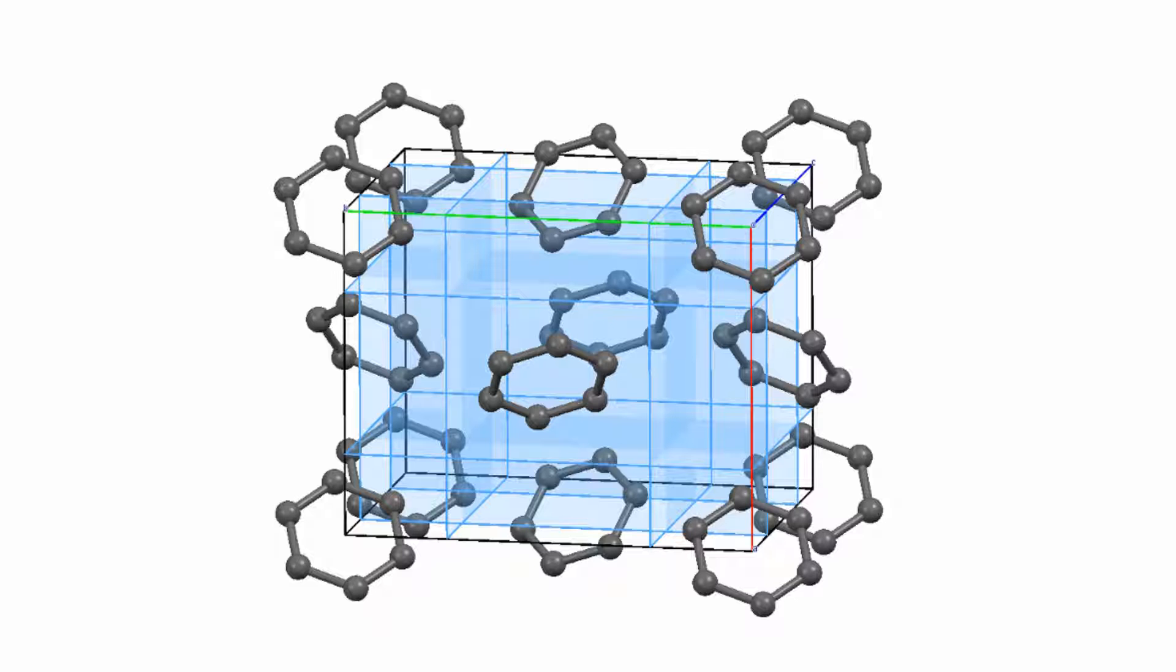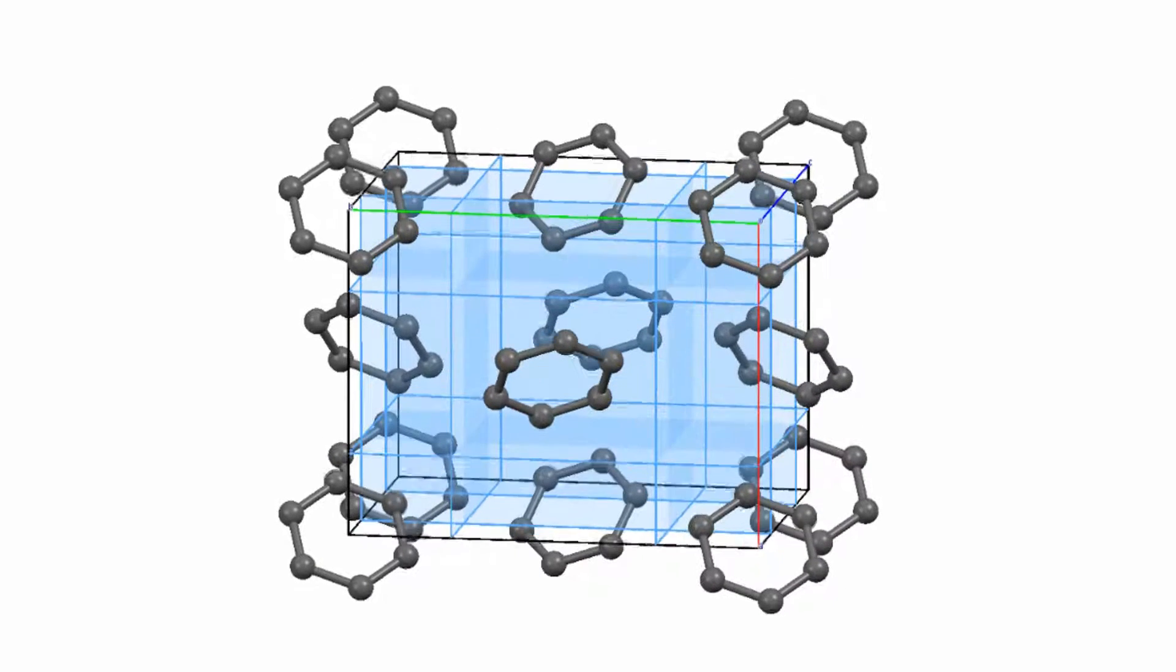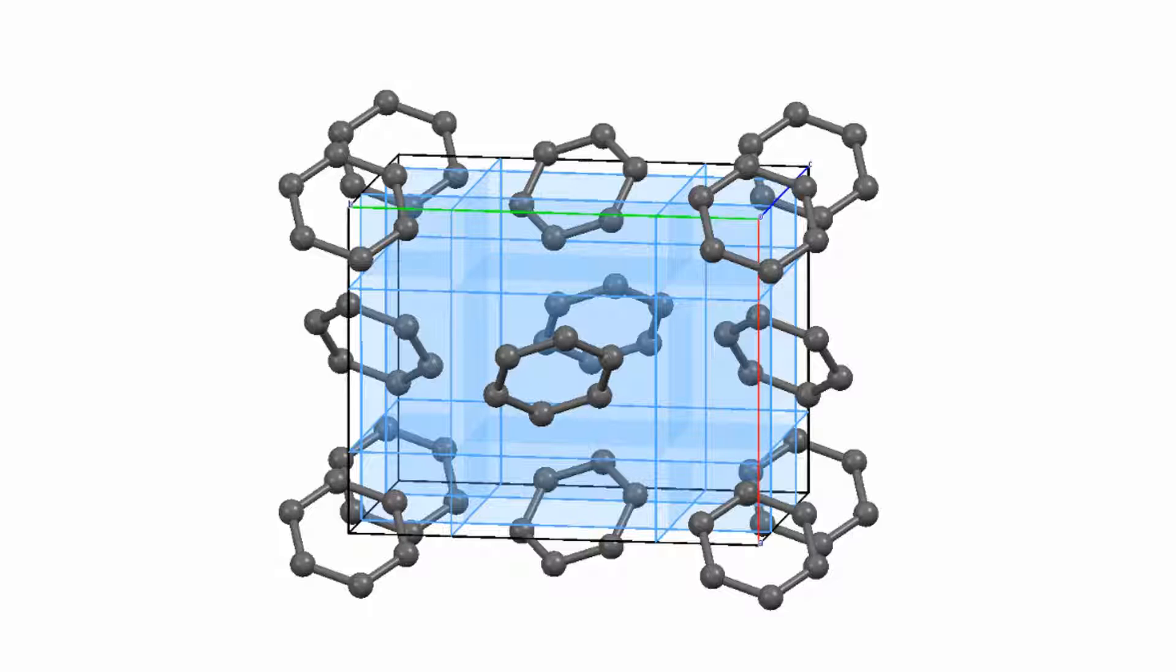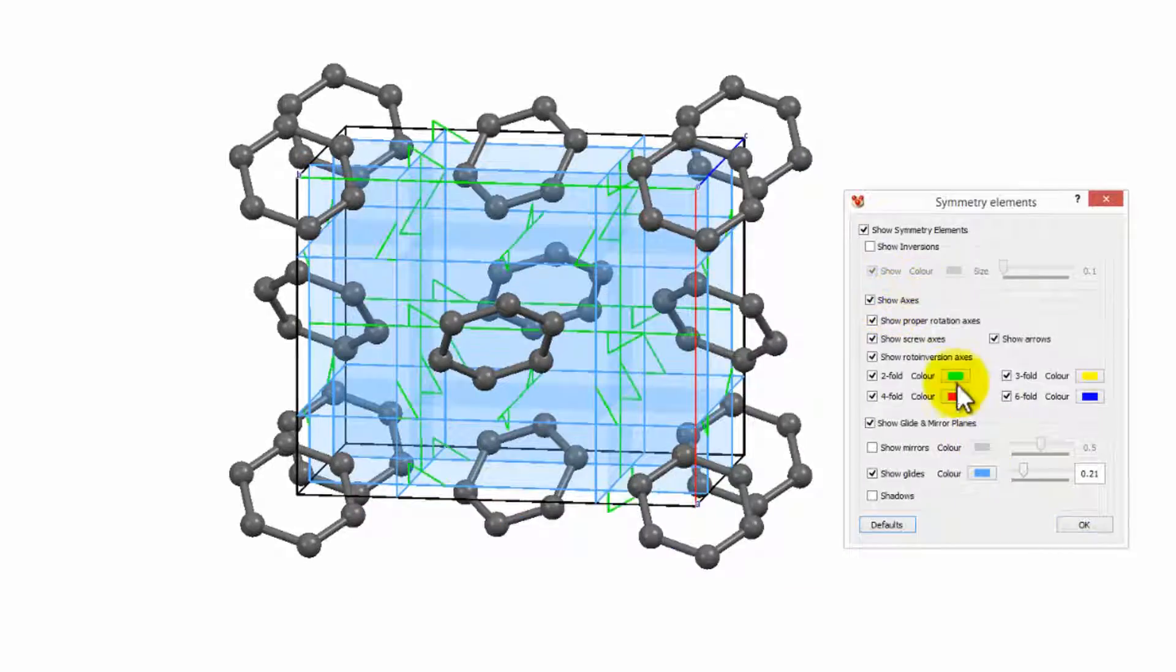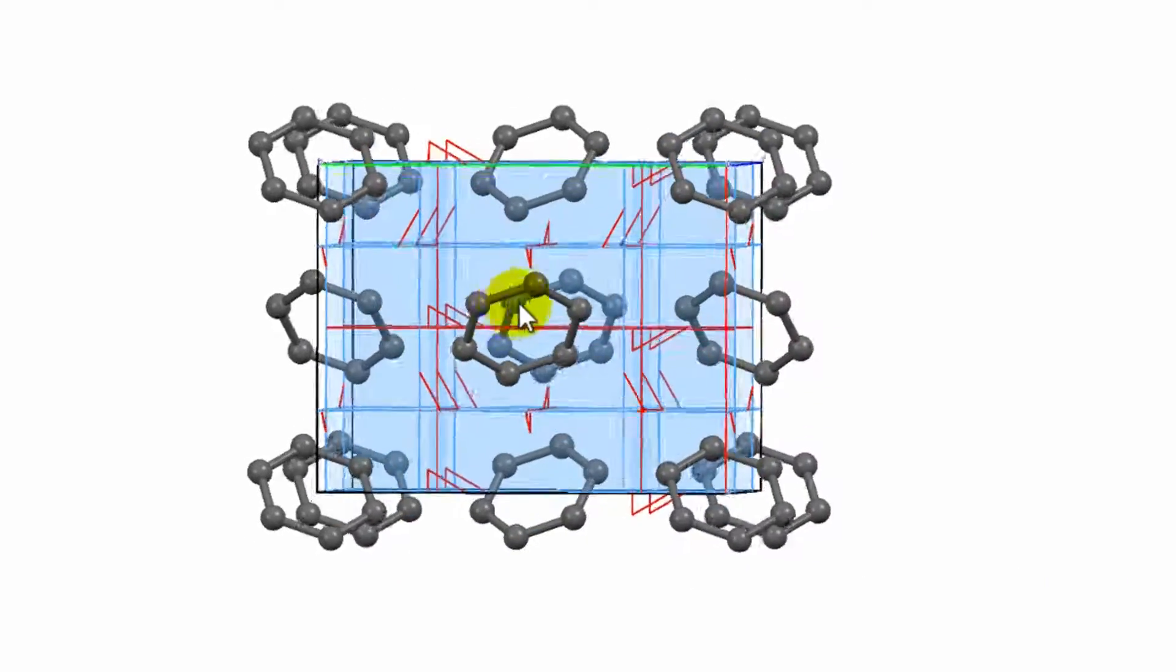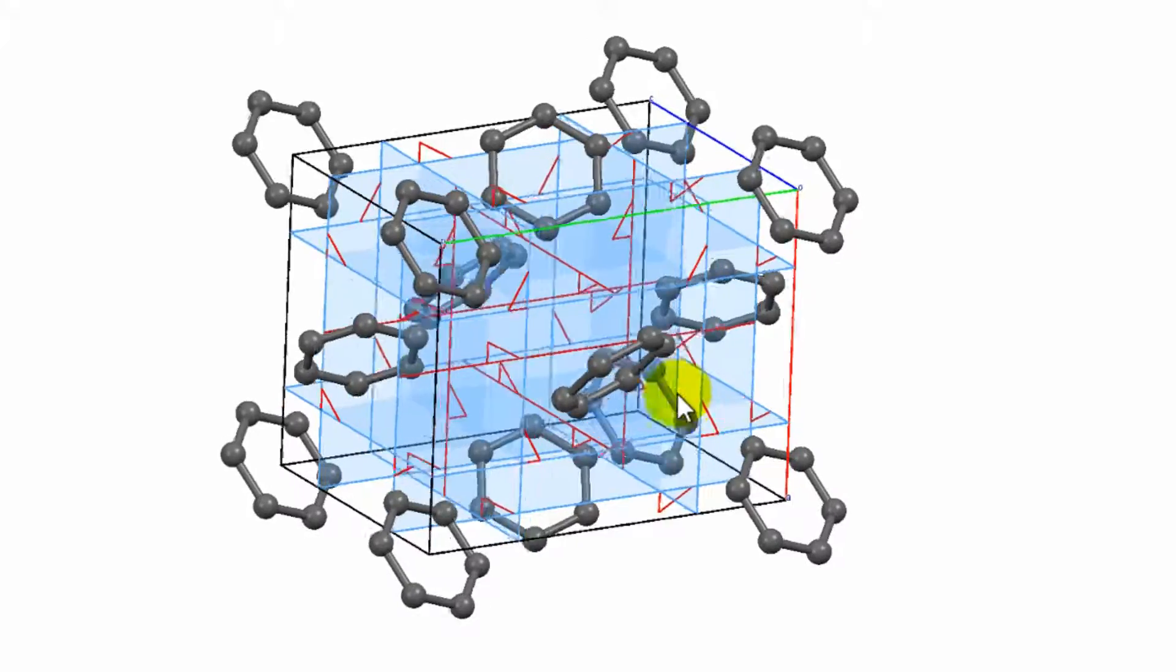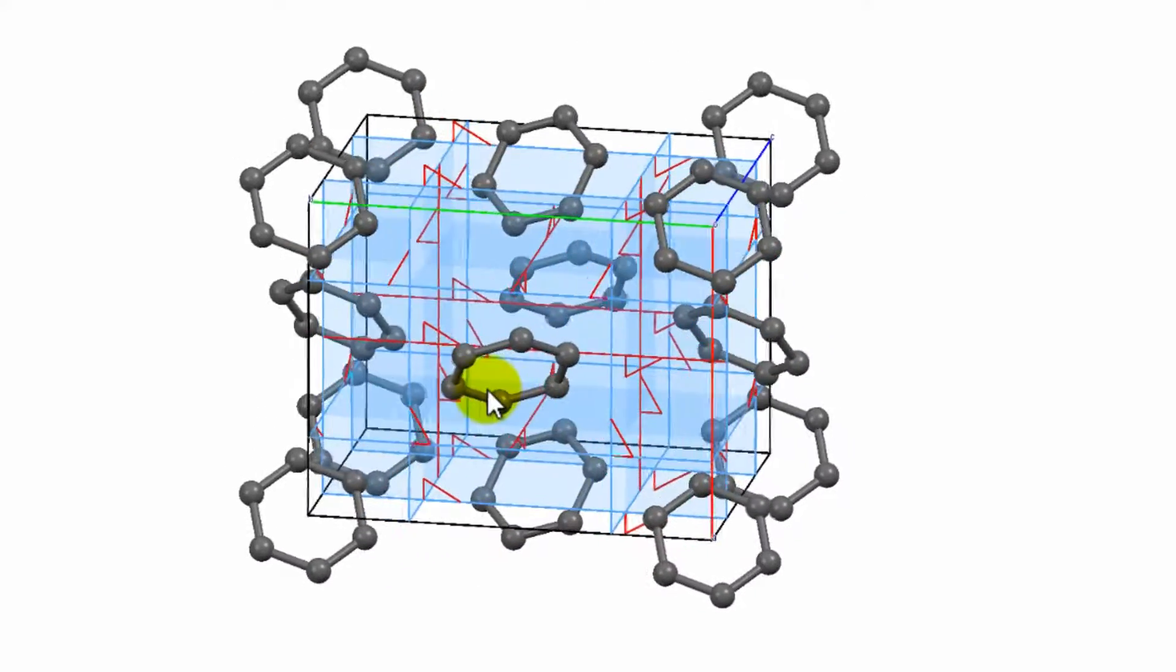What kind? Well, the translation component of glide planes A, B or C are all one-half. So, it's a 2-1 screw axis. And we can have a look. Display, symmetry elements, screw axis. Yes, here they are, running all along the lines of intersections of these glide planes.